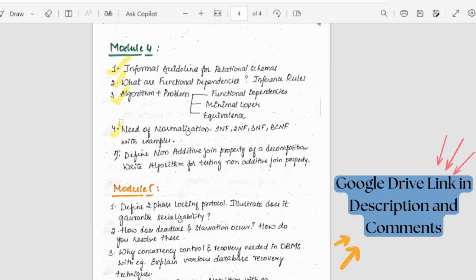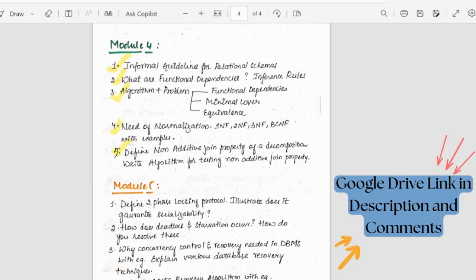Then what is normalization? What is the need of normalization? 1NF, 2NF, 3NF and BCNF explaining them with examples. Then we have non-additive joint property and an algorithm for that.